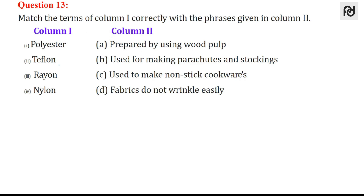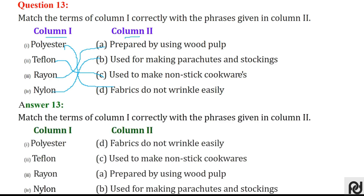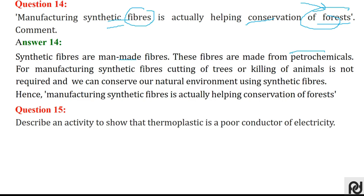Question 13 is match the following. Polyester — it is a fabric which does not wrinkle easily. Nylon — used for making parachutes and stockings. Teflon — used to make non-stick cookware. Rayon — prepared by using wood pulp. Question 14: manufacturing synthetic fibre is actually helping conservation of forests. Synthetic fibres are manmade fibres made from petrochemicals, so cutting of trees or killing of animals is not required, thereby saving the environment and helping conservation of forests.